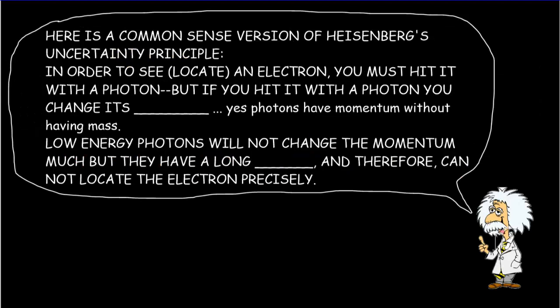Here's a common-sense version of it. If we want to see or locate an electron, to see something you've got to hit it with a photon. But photons themselves have some momentum, so they're going to knock the particle you're trying to look at and change its momentum. There becomes an uncertainty in the momentum of that electron.